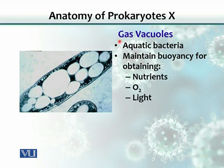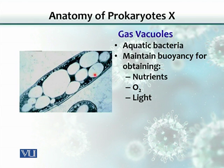Another inclusion is the gas vacuole. Bacteria accumulate vacuoles and trap different gases inside. If a bacterium is swimming in a stream of water where nutrients are present at a certain level, the bacteria accumulates gases or air to maintain its position at a particular depth — this is called buoyancy. Bacteria do this for obtaining nutrients, oxygen, or even light.